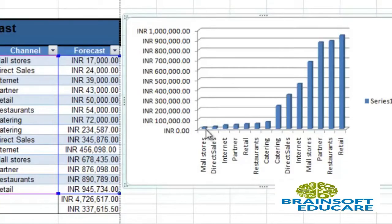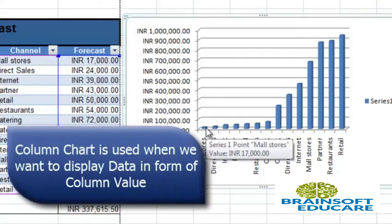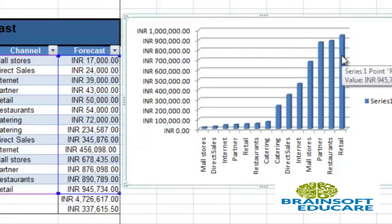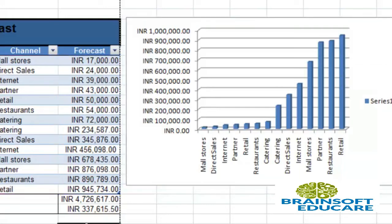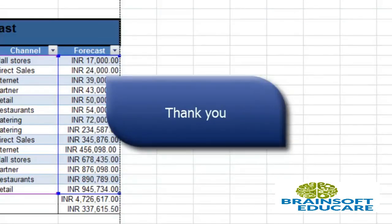You can see series 1 point mall store value is 17,000, and the value of series 1 point retail is 9,45,734 rupees. This is the use of charts in Excel — we can create charts very easily. Thank you.